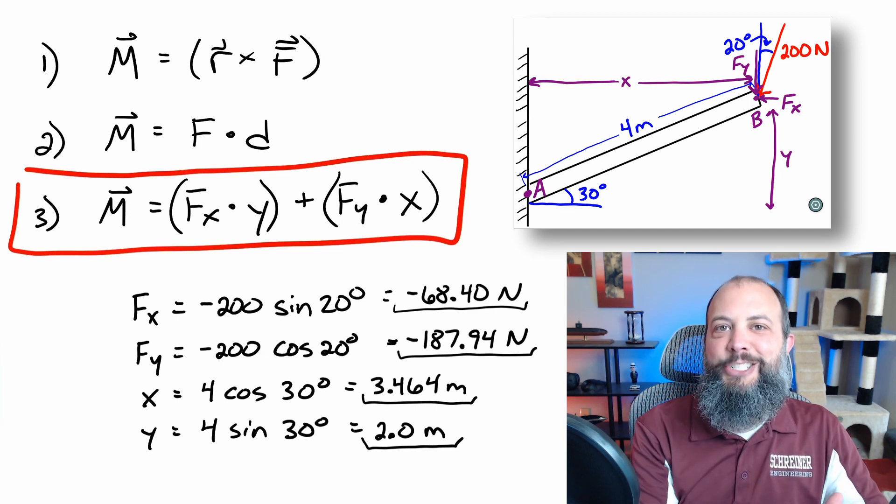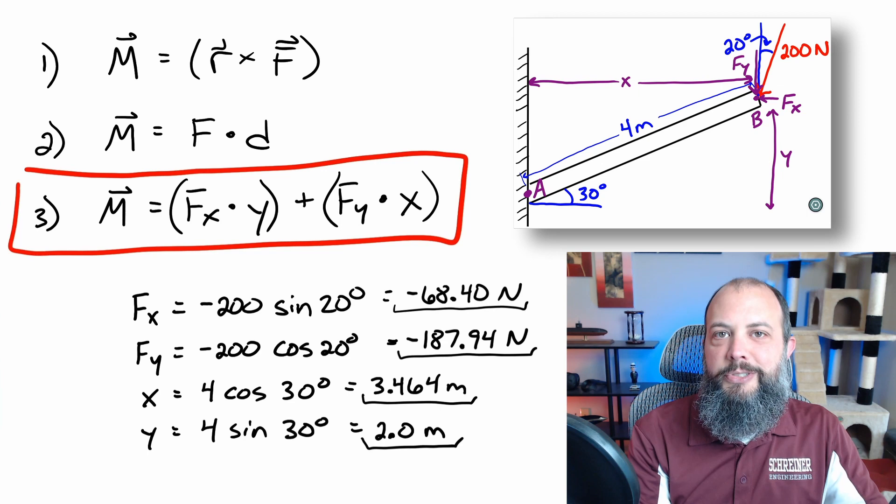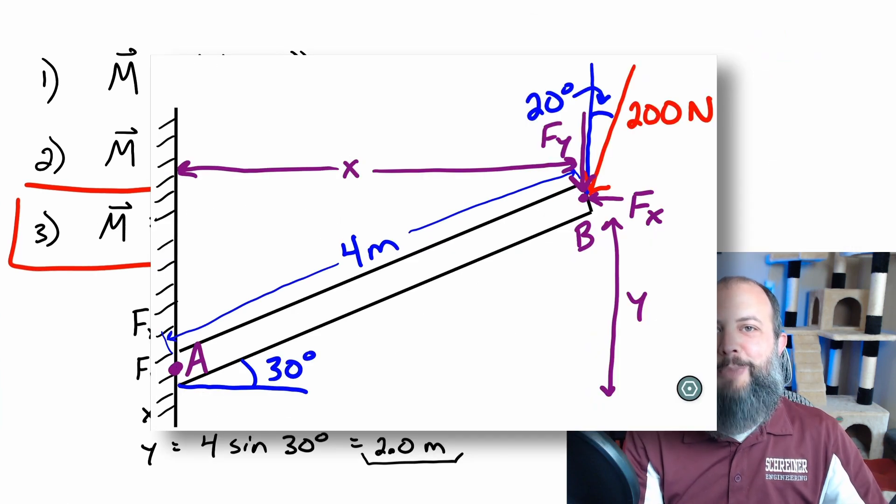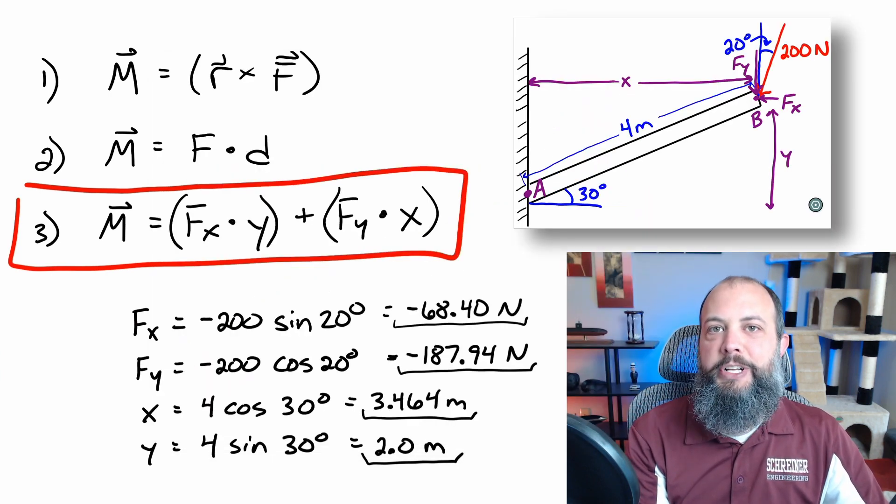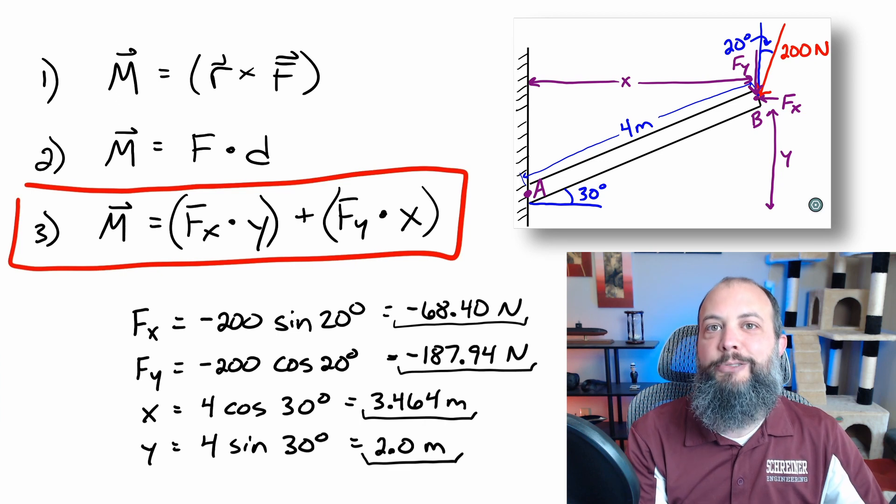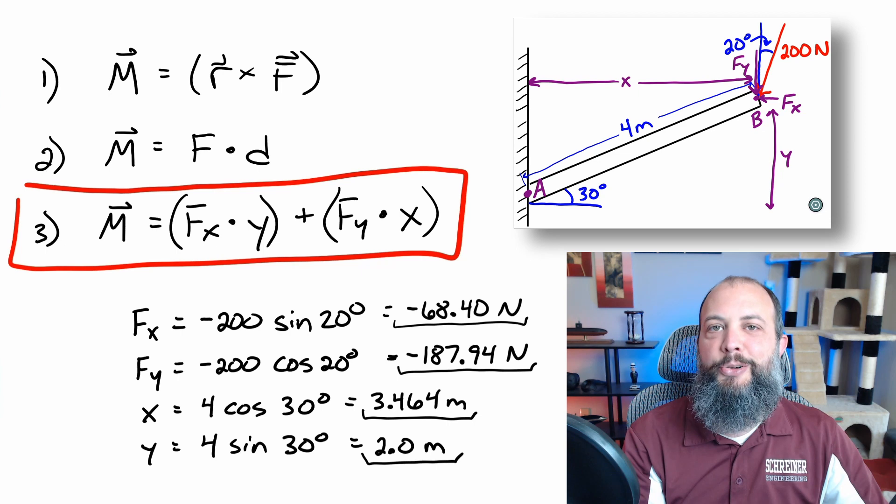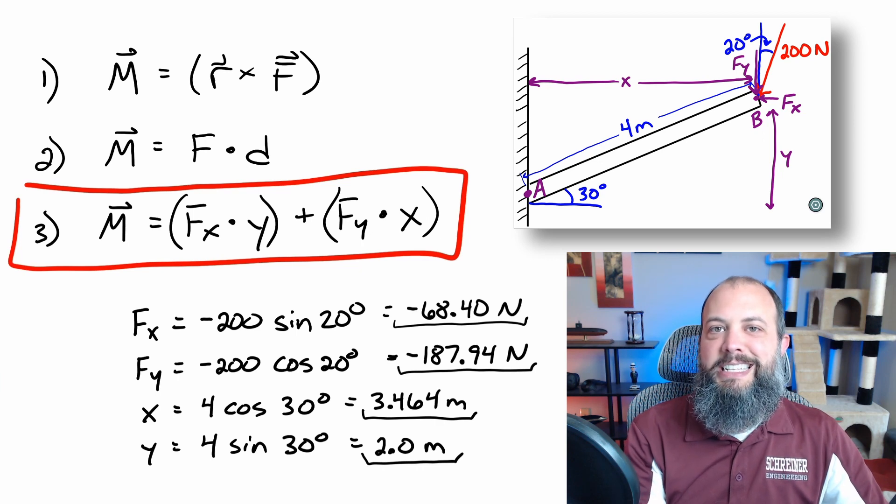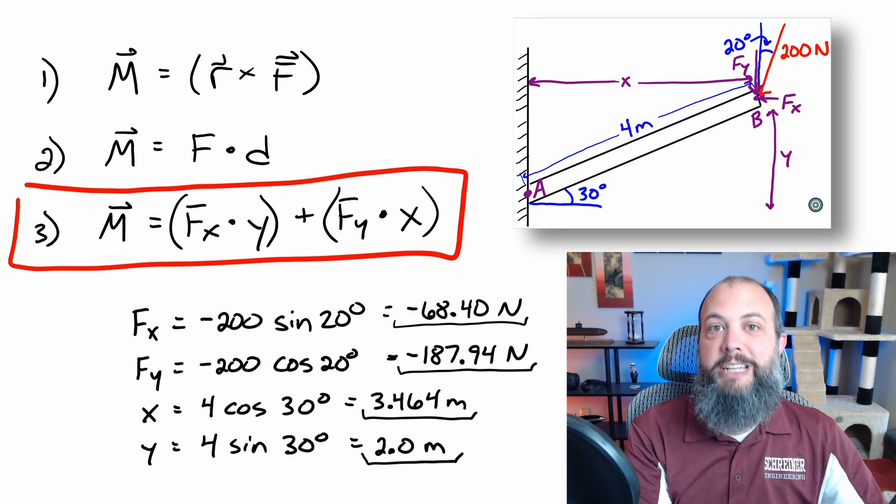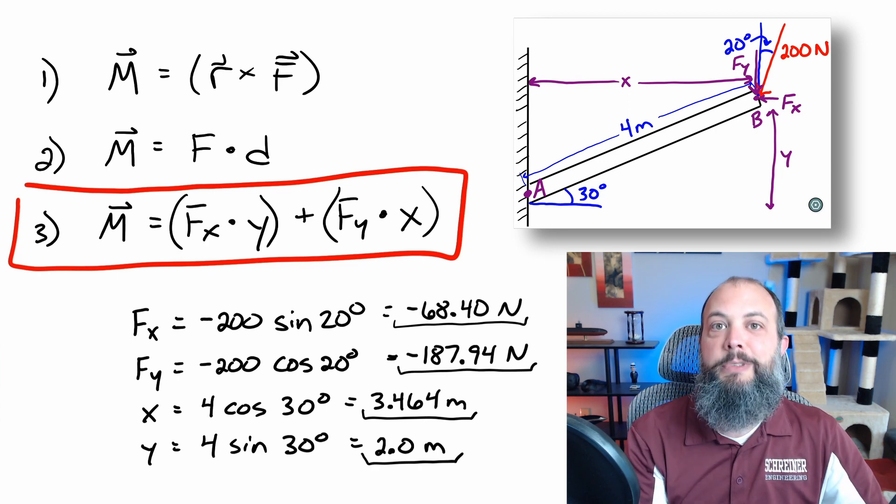In trigonometry, cosine is adjacent over hypotenuse. Since this 20 degree angle is measured with respect to the Y axis, the adjacent side is the vertical direction. So the Y component of this force is cosine of 20 degrees. The horizontal axis is the opposite the 20 degrees, and so the force component is 200 sine 20 degrees for the X direction. And then I've manually inserted these negative signs because the red 200 Newton force is pointing left, which is the negative X direction, and down the negative Y direction.